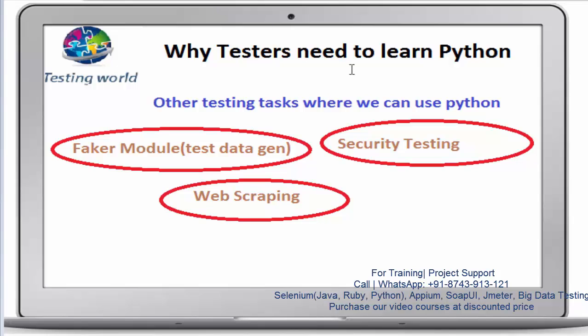Python can be used to perform many other tasks as well. When working as a manual or automation tester, we often require a lot of test data, and the same is true for performance testing. For that, we can use different modules available in Python. One of the most popular is the Faker module, which can generate millions of realistic test data records within a few seconds — for example, first names and last names for the United States.